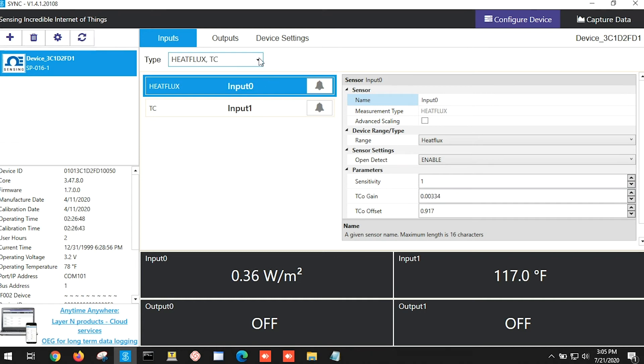And if we click on the input configuration tab and choose the heat flux sensor input type, we can configure our system using the parameters found in your heat flux sensor's datasheet. Now that we've configured our heat flux sensor,